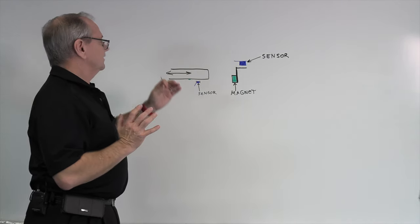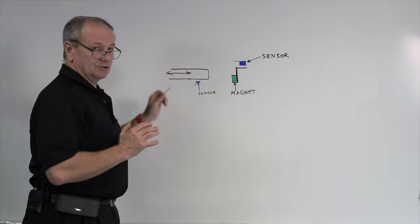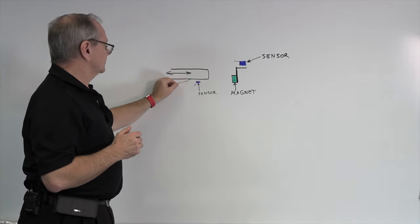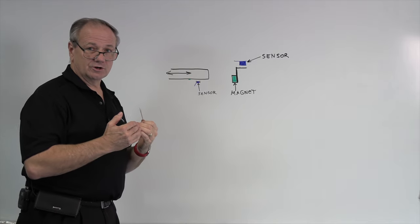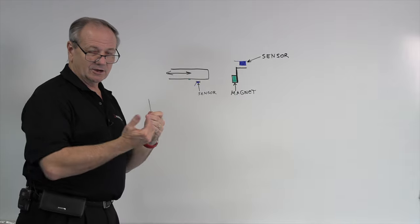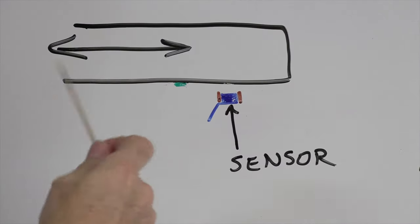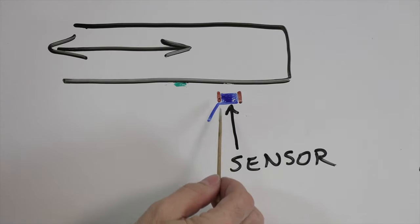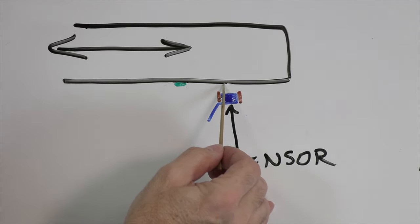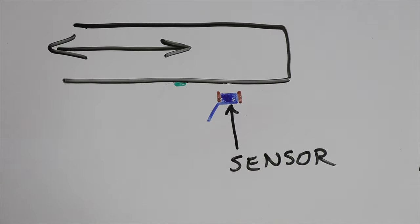First one we want to look at is the customer had a cylinder that moved back and forth, and they had a magnet affixed to this cylinder, and they wanted to know when it reaches the end of its stroke to signal to come back and go back and forth. The problem was that the sensor was picking up the magnet before they wanted it to. So we recommended putting a piece of steel on both sides of the sensor so that it shielded it until the magnet was right across from it.